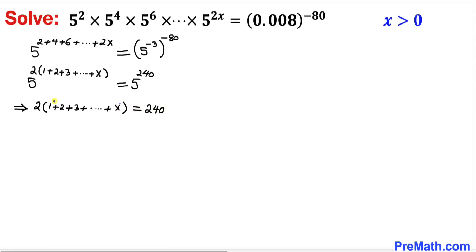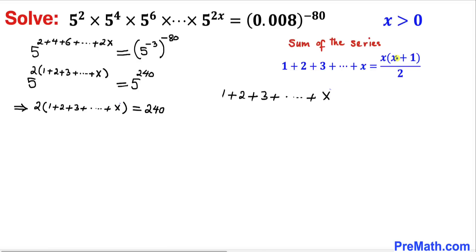Now let's focus on the part inside the parentheses. Recalling the sum of an arithmetic series, 1 plus 2 plus 3 all the way to x equals x times (x plus 1) divided by 2. So we can replace that sum with x times (x plus 1) divided by 2.